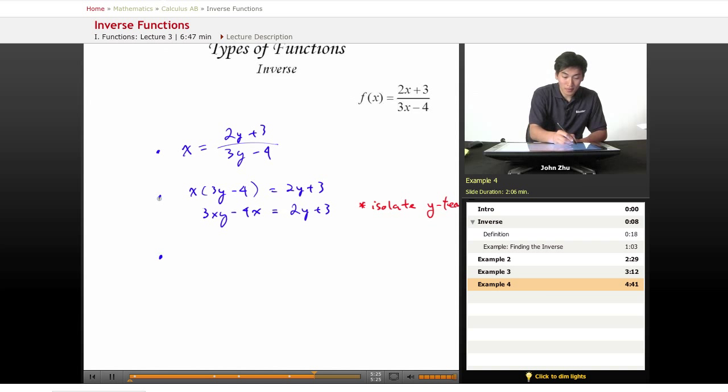And we have 3xy minus 2y equals, and we move the x to the other side. So we will factor out a y. We get 3x minus 2 equals 4x plus 3.